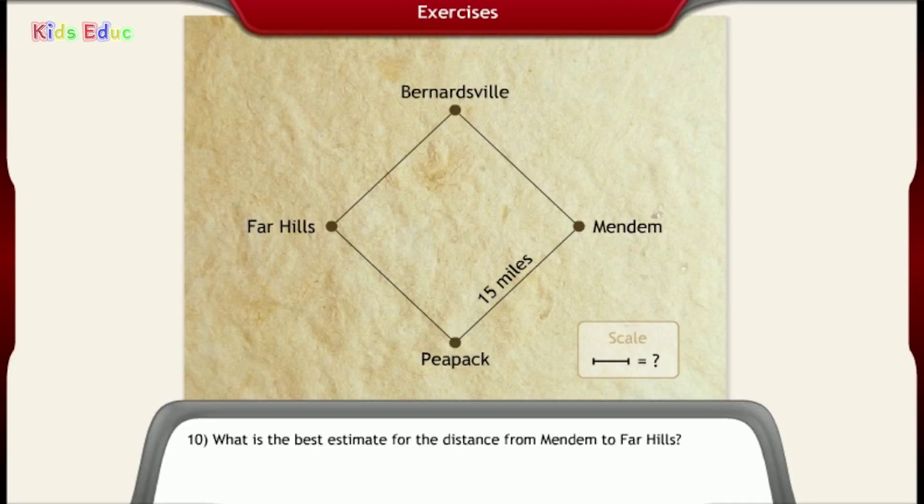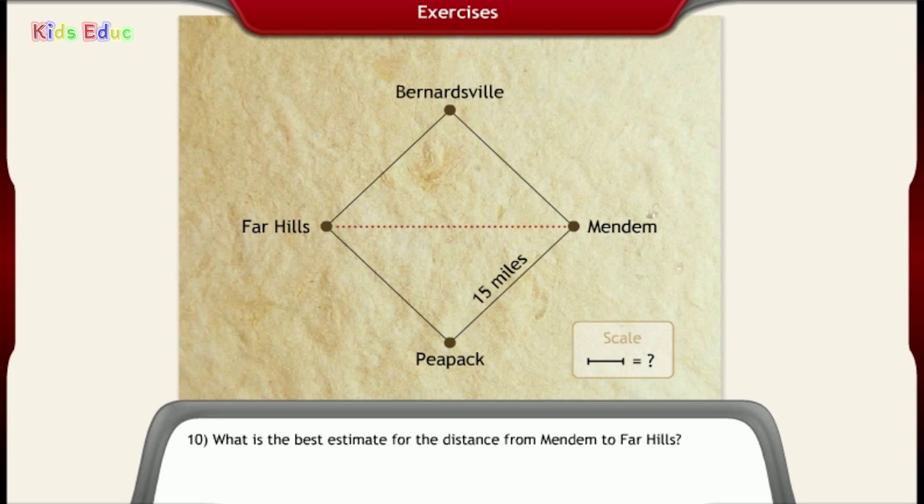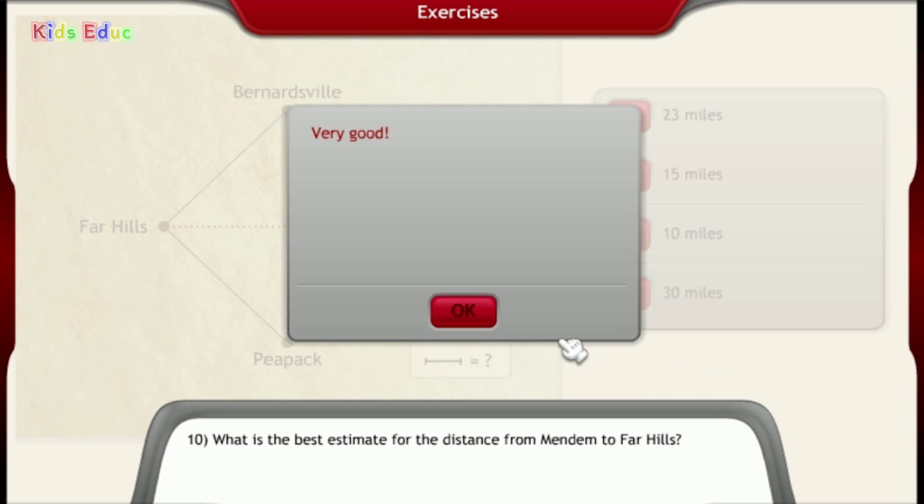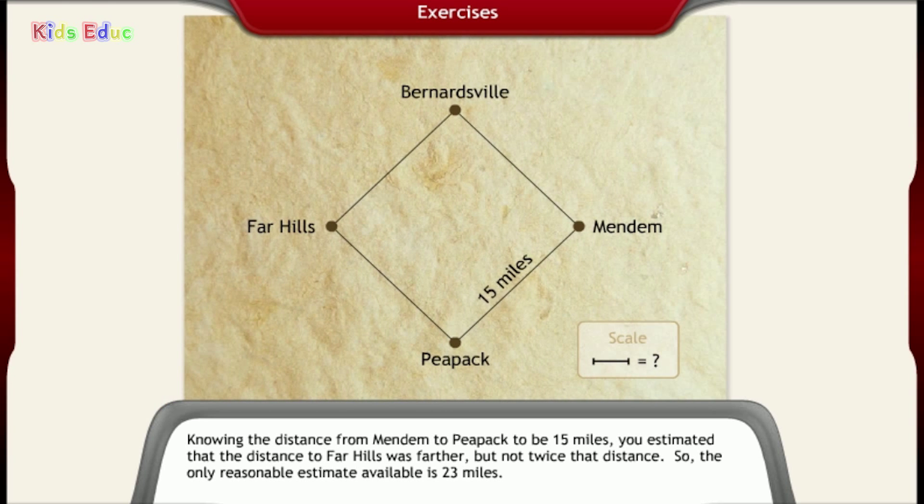Number 10, what is the best estimate for the distance from Mendem to Far Hills? 23 miles, 15 miles, 10 miles, 30 miles. 23 miles. Very good. Knowing the distance from Mendem to Peapack to be 15 miles, you estimated that the distance to Far Hills was farther, but not twice that distance. So the only reasonable estimate available is 23 miles.